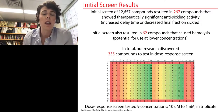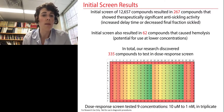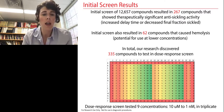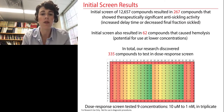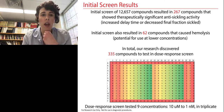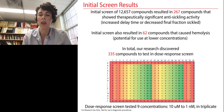What we found in our initial screen was 267 compounds showing therapeutically significant anti-sickling activity and 62 compounds that caused hemolysis, for a total of 335 compounds to test in a dose response screen. The dose response screen was performed at nine concentrations, testing all 335 compounds from 10 micromolar down to 1 nanomolar in triplicate, again using three different donors' blood within each triplicate.